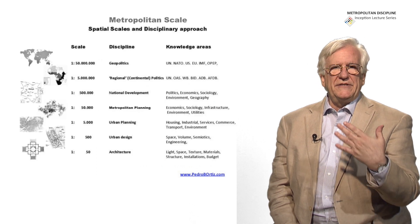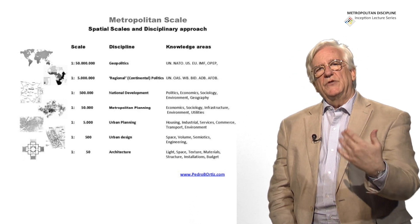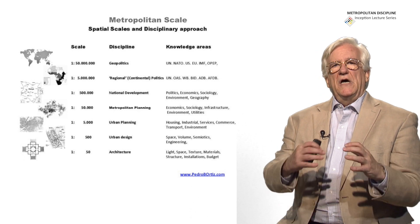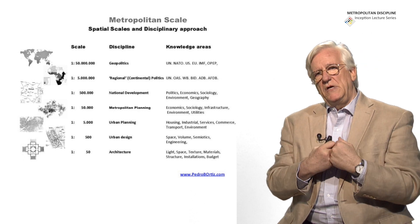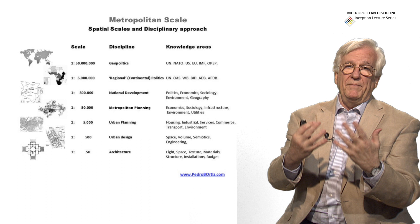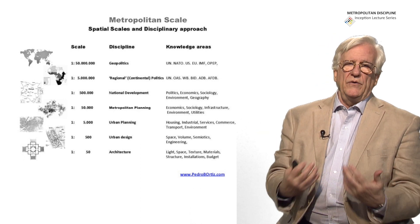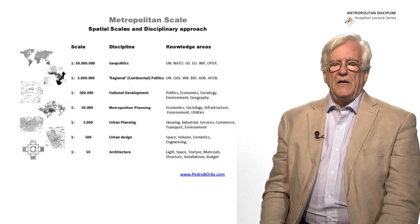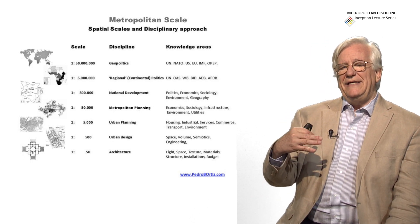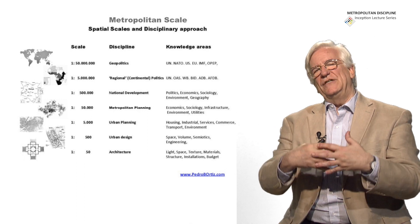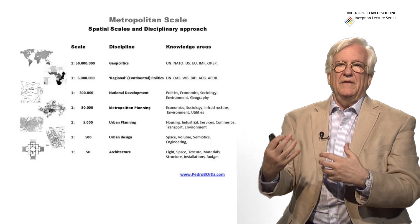The metropolis is at a scale which is halfway between the urban dimension and the national dimension. As we saw in one of the first presentations, we have different scales: from architecture design at 1:500, urban design at 1:5,000, urban planning, metropolitan planning, national planning, and then a continent and the world. The client that needs that kind of planning is different in every case, and the disciplines involved in that decision-making and planning are different.